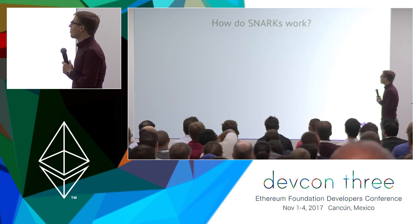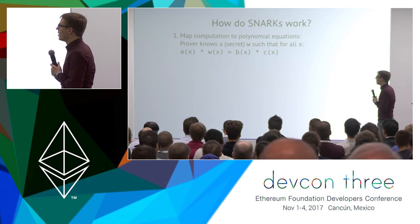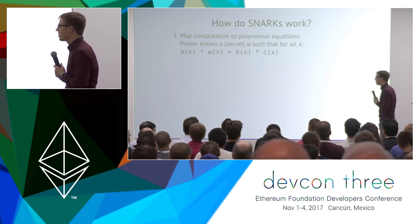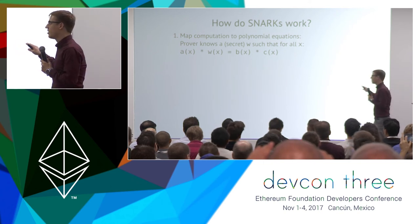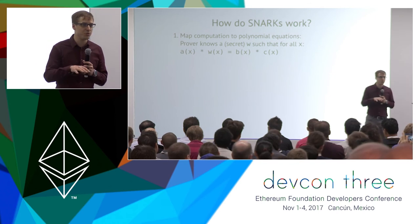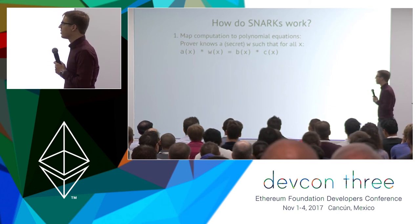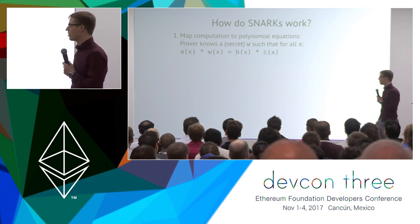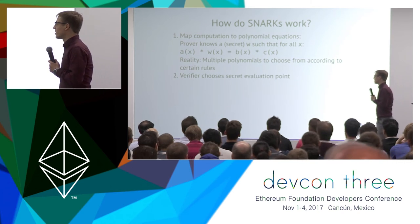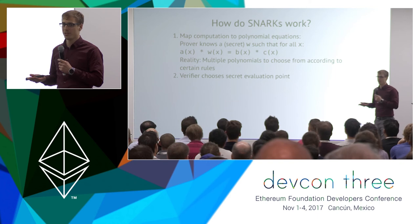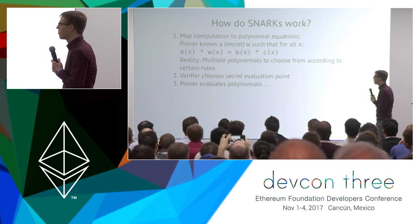How do SNARKs use these polynomials? We use special polynomial equations where a prover knows a secret polynomial W such that for all X: A(X) · W(X) = B(X) · C(X). This is a simplification — usually you have multiple polynomials. W is the secret solution known only to the prover, and the prover wants to convince the verifier that she knows it. The verifier chooses a secret evaluation point to check that this polynomial equation holds, and asks the prover to evaluate the secret polynomials.